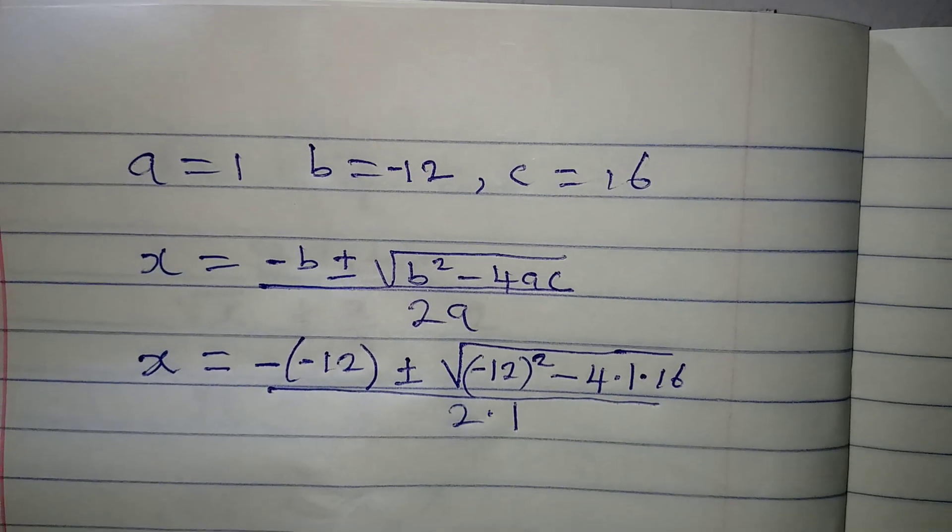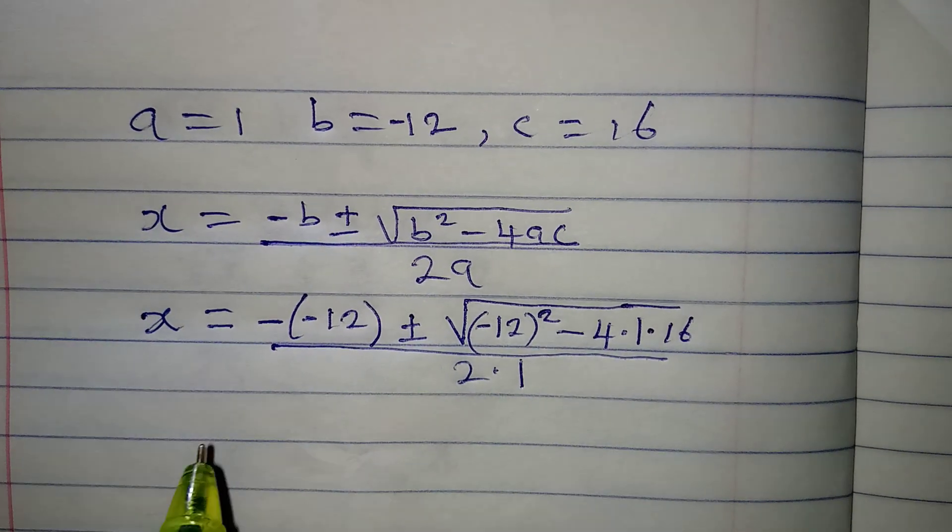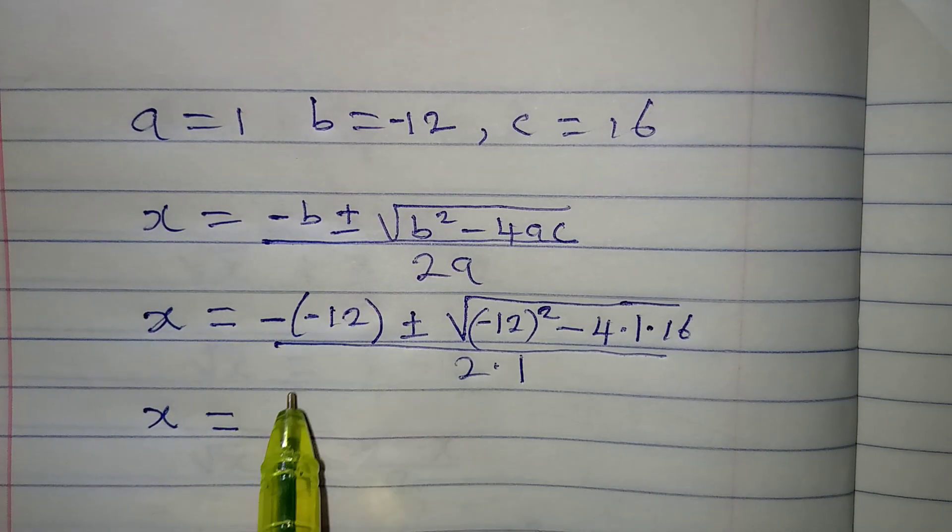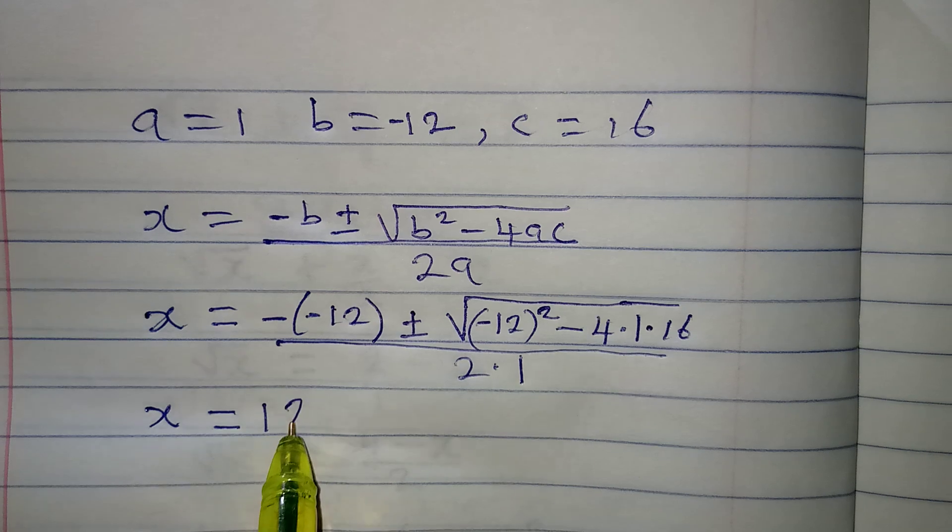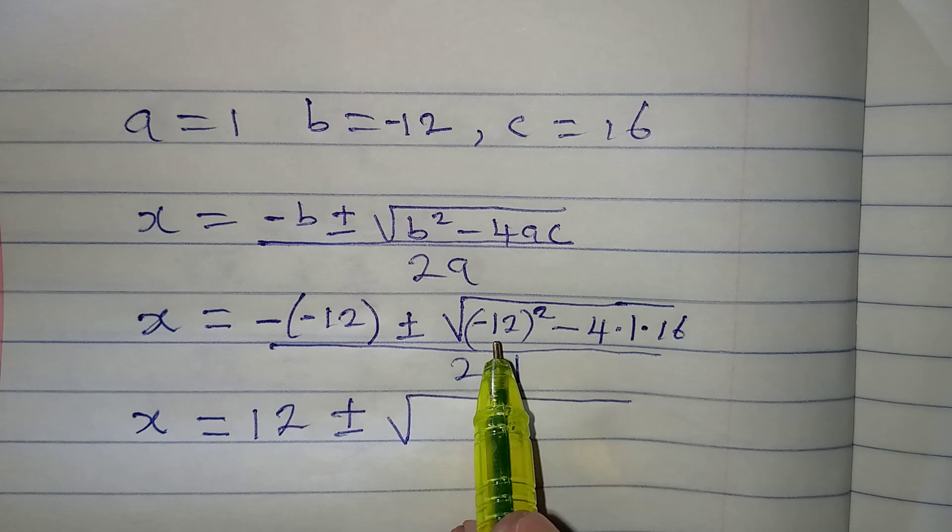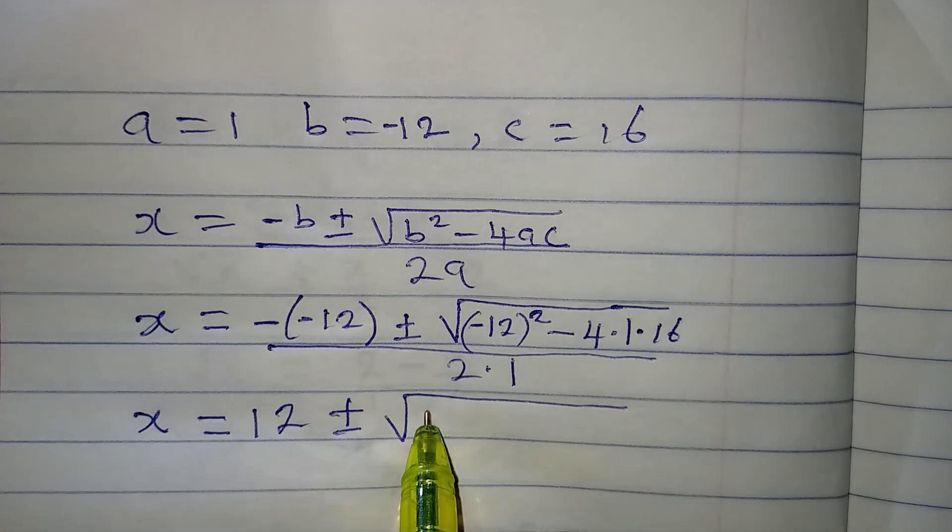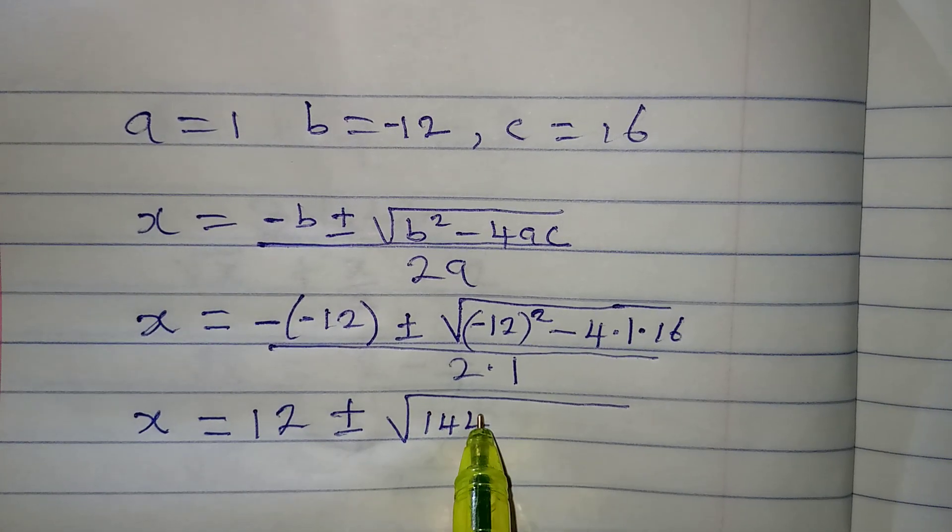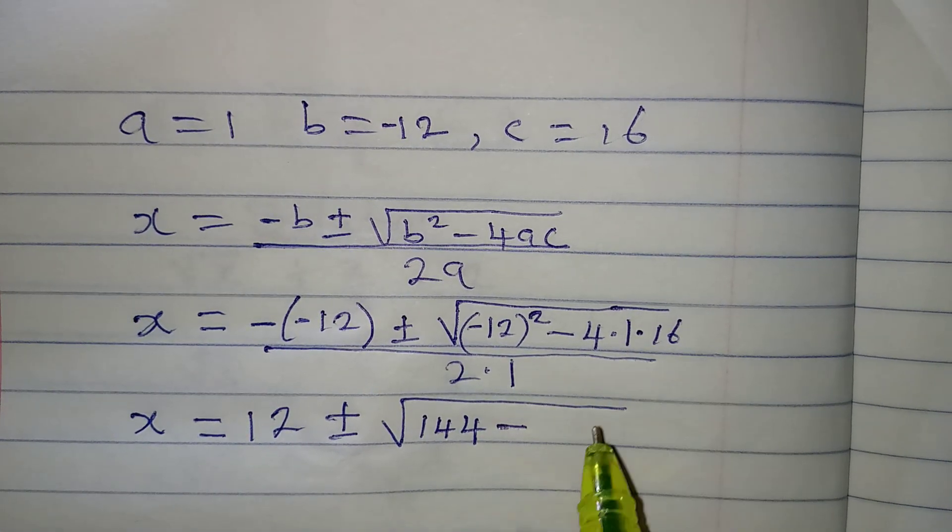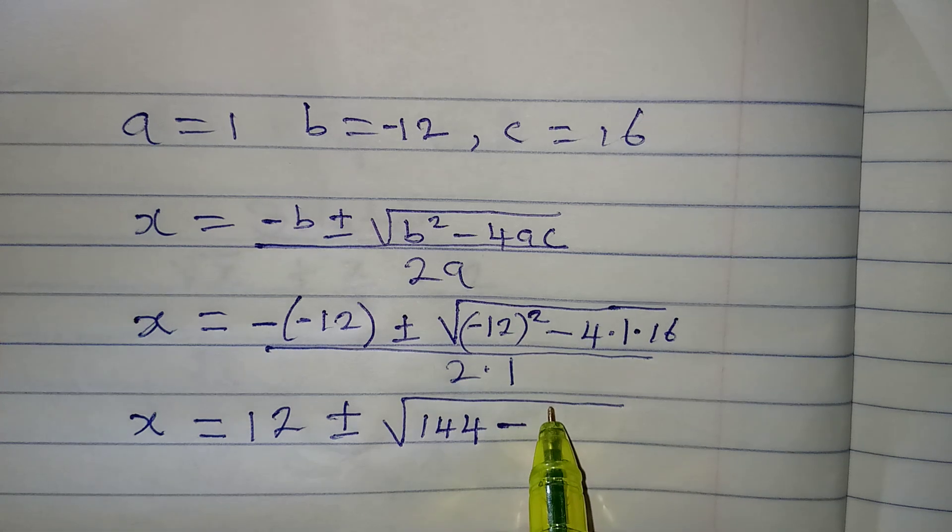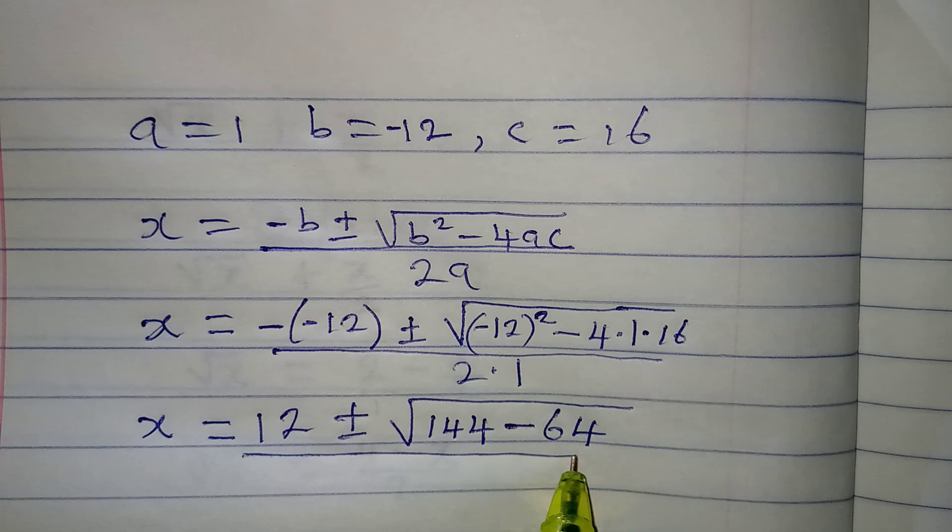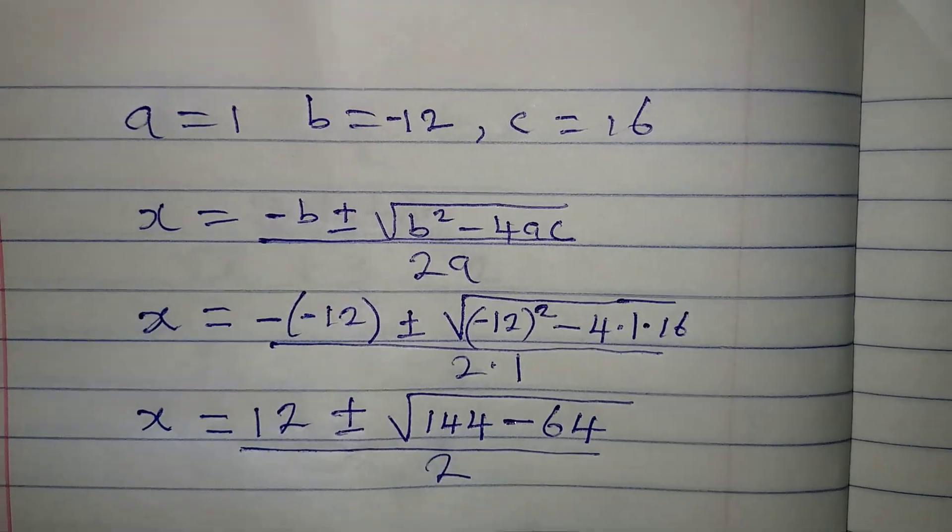So if we continue with this, then x will be equal to negative, negative 12 will give us positive 12, plus or minus. Then square of minus 12 will give 144. The negative will cancel itself. Then minus 4 times 1 times 16 is actually 64. And this is over 2.